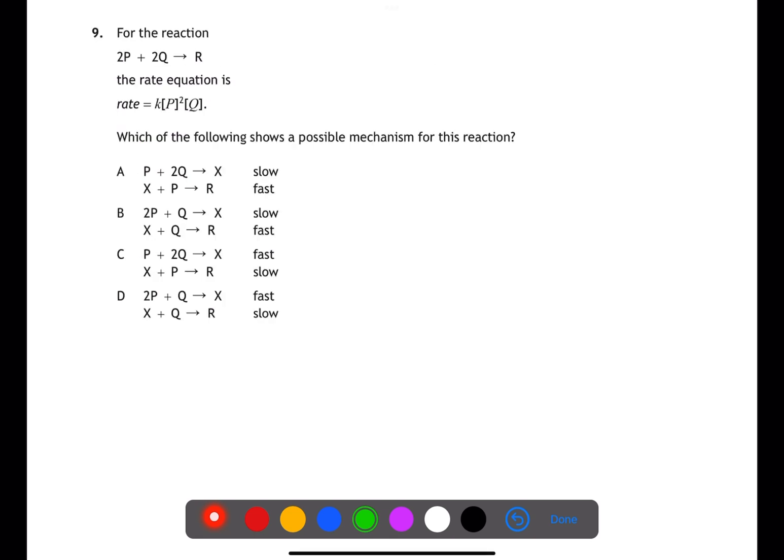For question 9 we have the overall reaction and the rate equation. The rate equation represents the rate determining step or the slowest step in the reaction. You have the two reactants in the rate equation and a 2 for the P which means that both are being used within the rate determining step. This means the equation for the rate determining step will be 2P plus Q to give an intermediate. Therefore we can eliminate A and C. The rate determining step is the slowest step therefore the answer will be B.